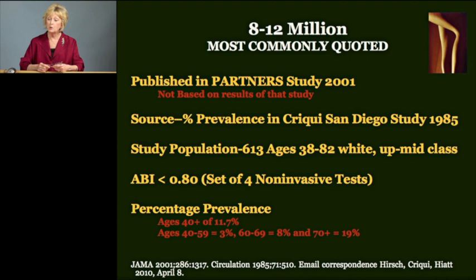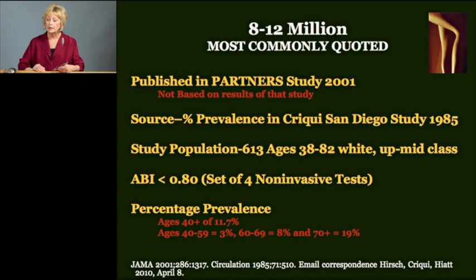8 to 12 million — that's the most commonly quoted estimate for the number of people with PAD. Although published in the PAD study, this number was not calculated based on any results from that study. Rather, the 12% prevalence in those 40 and over was based on the Cricky San Diego study published in 1985. This study was done in a little over 600 white, upper-middle class individuals who lived in Orange County, California. Importantly, ABI less than 0.8 was the definition, and they also included a set of four noninvasive tests. The key thing to remember is that the calculation of 8 to 12 million was based on the population circa 1995 — now that's almost 20 years ago.